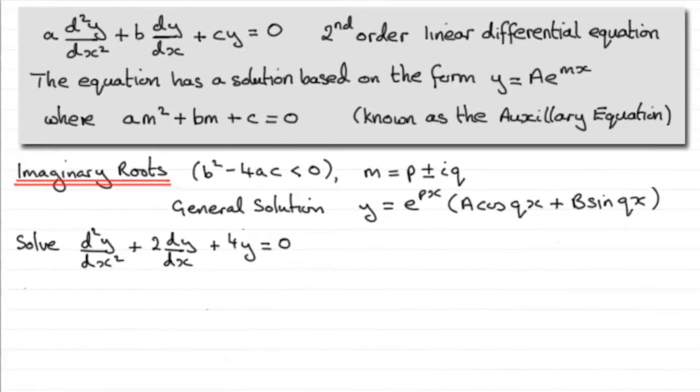Hi. Now in a previous video I showed you that if you had a second-order linear differential equation where a, b, and c were constants, then we would work out the auxiliary equation, figure out what m is, and depending on the type of roots that we got, we would get a particular general solution.